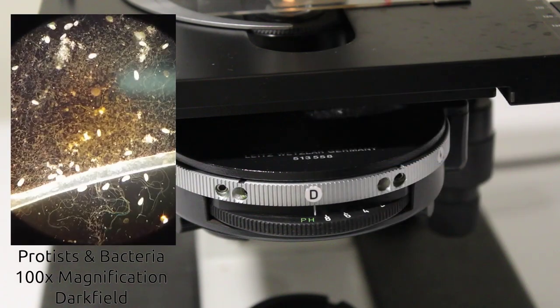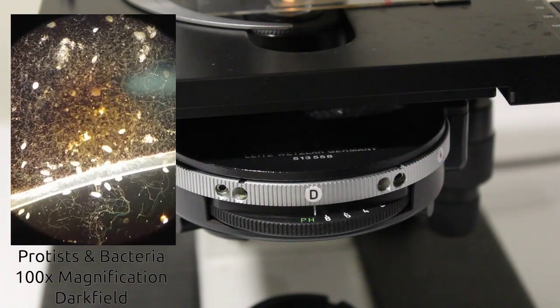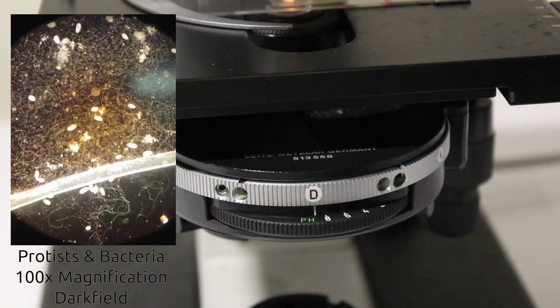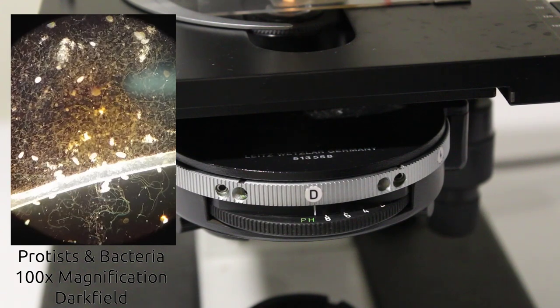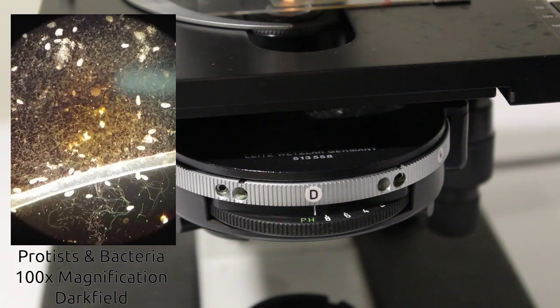Because of this we get really good contrast and it's really easy to see cells but unfortunately it only works at low magnification so it doesn't have much of a use in the brewery.